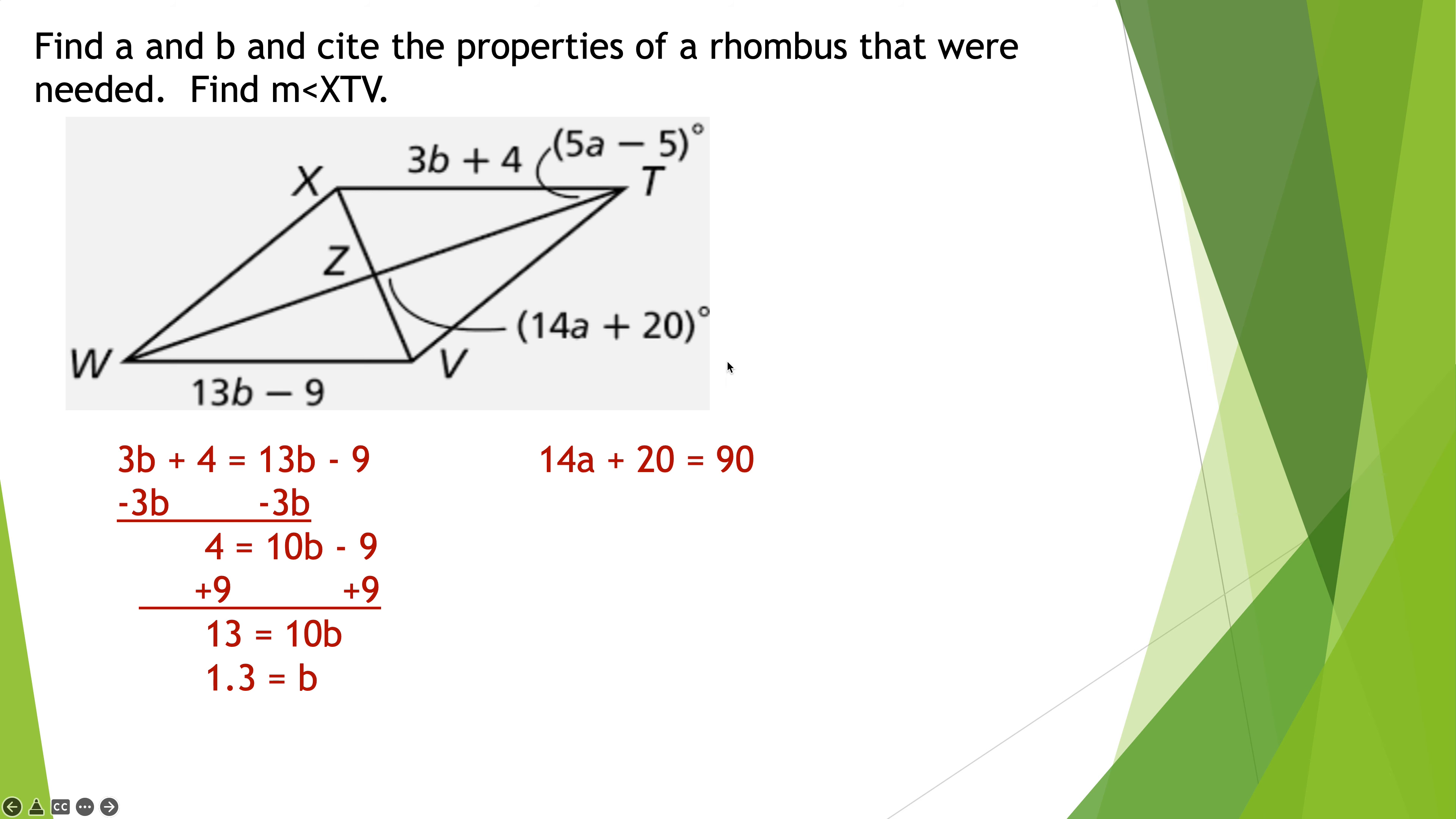Next up, let's go about finding the angle. We know that the diagonals of a rhombus are perpendicular. So, 14A plus 20 is 90. Subtracting the 20, 14A is 70. Dividing by 14 and A is 5. So, we have B is 1.3. We have A is 5. Then it wants us to find the measure of angle X, T, V. Okay, X, T, V is going to equal, this is 5A minus 5 is half of it. And then I've got to double it because the diagonals bisect the vertices. So, 5A minus 5, 5 times 5 minus 5 is 20. So, that whole angle is 40.